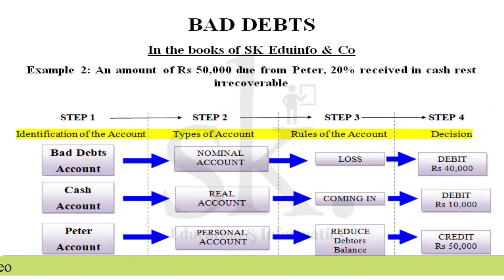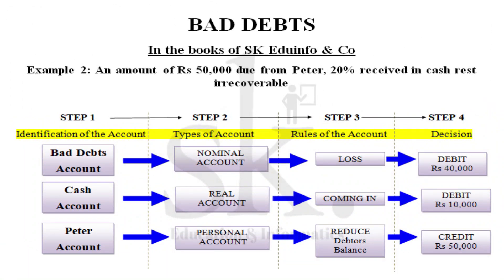Example two states: an amount of rupees 50,000 due from Peter — 20 percent received in cash, rest irrecoverable. Out of the total claim of 50,000, you have received only 20 percent and the rest 80 percent is irrecoverable, which means bad debt. We identify three account heads: bad debt account, cash account, and Peter's account. 20 percent of 50,000 is 10,000 rupees received in cash, so 50,000 minus 10,000 equals 40,000 which you are not going to get — that is the bad debt loss.